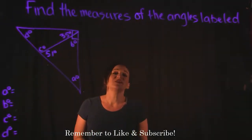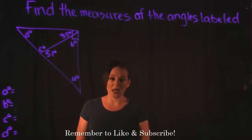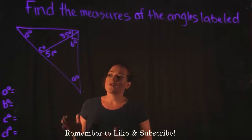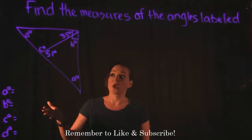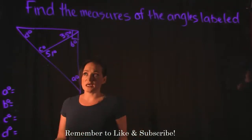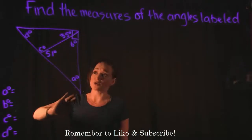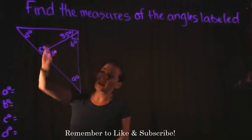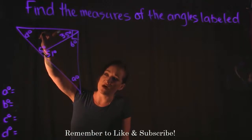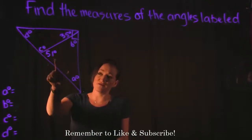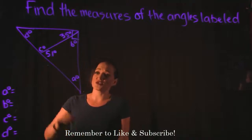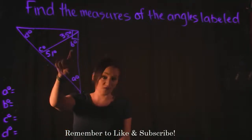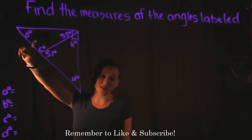This video is going to focus on how we find the measures of angles. For this particular example, we're given a triangle that is split into two smaller triangles. We're given a measure of 35 on the left triangle and 51 on the right one. Each has two missing angles, so we need to find A and B for the right triangle and C and D for the left one.